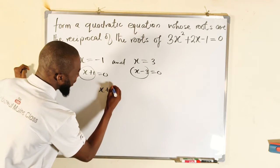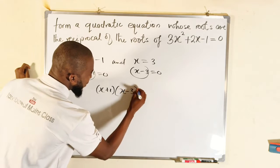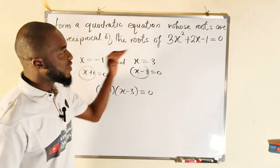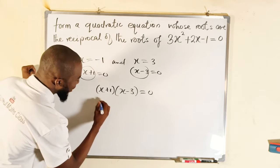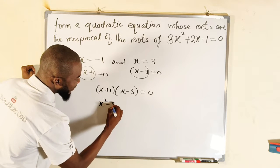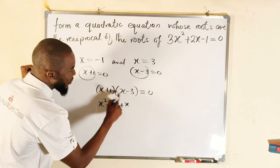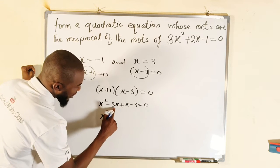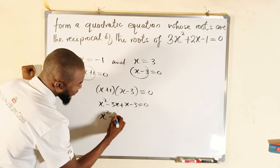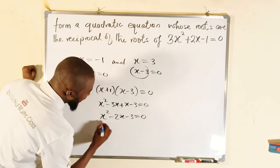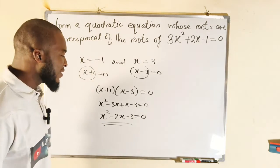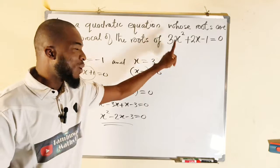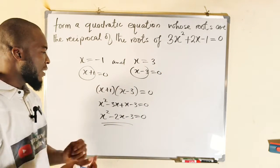First method: we bring the roots backward, so that we have (x plus 1) equal to 0 and (x minus 3) equal to 0. Then we multiply them together. Taking (x plus 1) times (x minus 3) set equal to 0: x times x gives x squared; x times negative 3 gives negative 3x; 1 times x gives x; 1 times negative 3 gives negative 3. Simplifying: x squared minus 3x plus x gives minus 2x, so we get x squared minus 2x minus 3 equal to 0. This equation has roots negative 1 and 3, which are the reciprocals of the original roots.